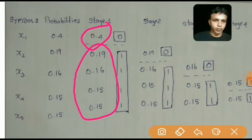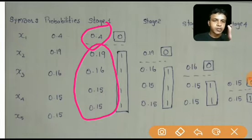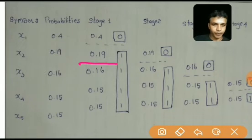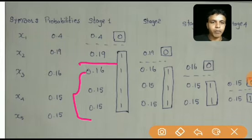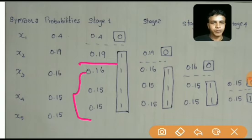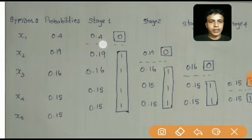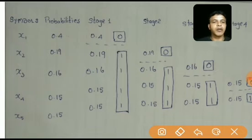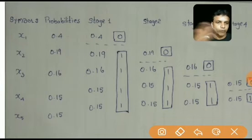In Stage 1, I am dividing the symbols according to their probabilities into upper and lower parts. In the upper part I have only one probability, 0.4. The reason is that if I take 0.4 and 0.19 in the upper part, the sum becomes 0.59, whereas the sum of the lower part becomes 0.46, which is smaller — so I do not do that.